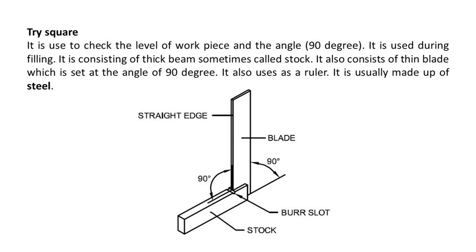Try square is used to check the level of a workpiece and the angle — 90 degrees. It is used during filing. It consists of a thick beam, sometimes called stock, and also a thin blade which is set at an angle of 90 degrees. It also functions as a ruler and is usually made up of steel.